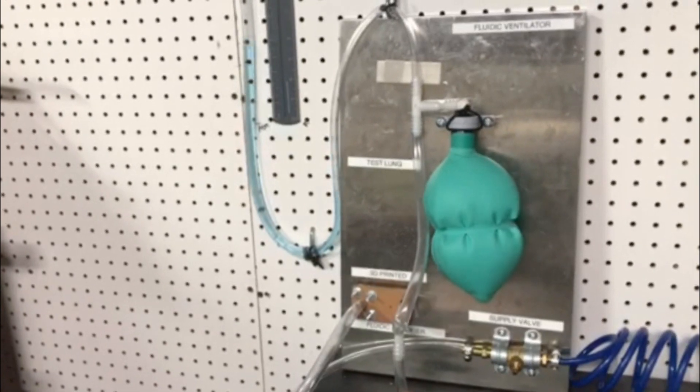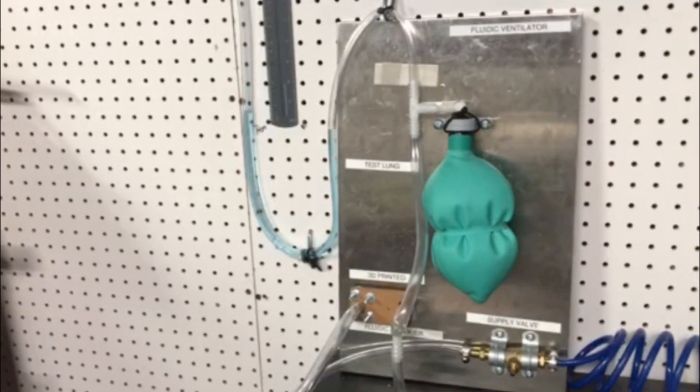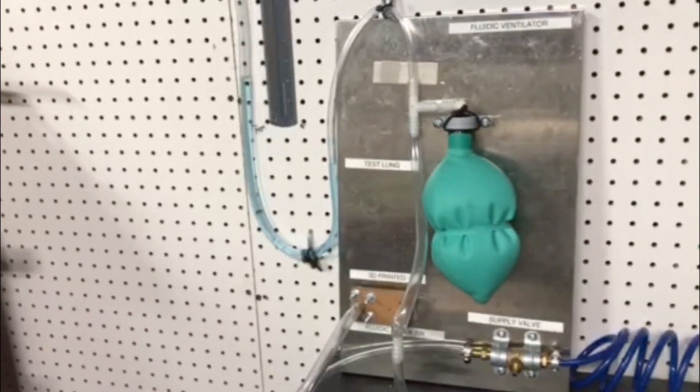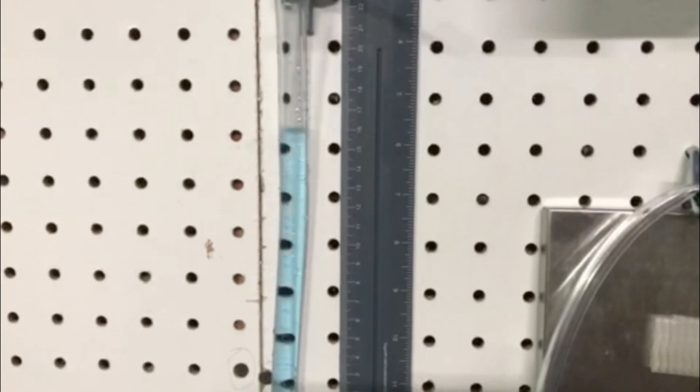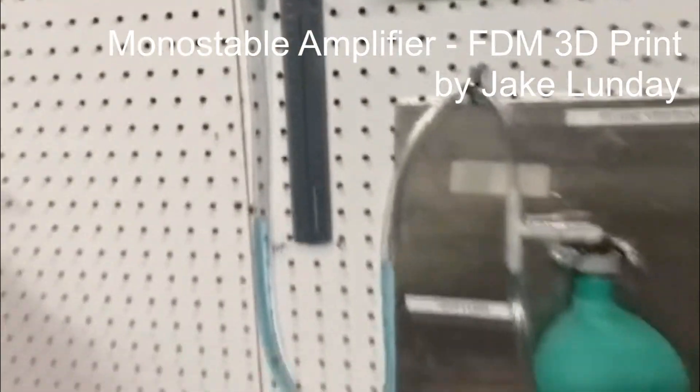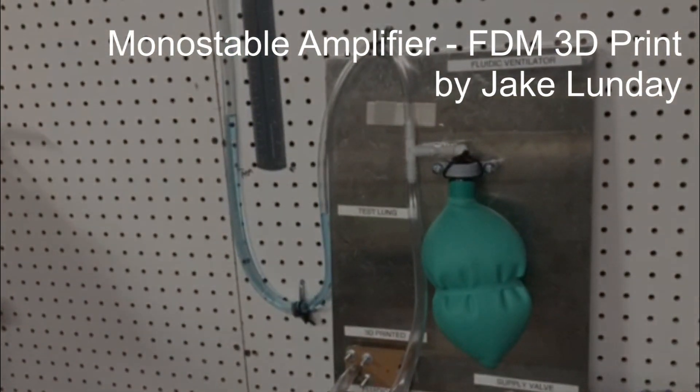And here's another design by Jake Lundy, who uses a different fluidic concept to perform the same timer effect. You can see the different pressures reached in the liquid pressure sensor on the left. We call this measurement device a manometer and it can be made by anyone with simple tubing and some water.